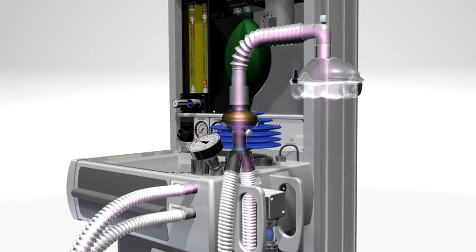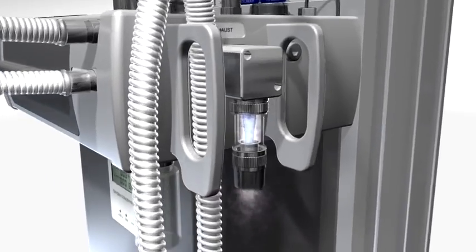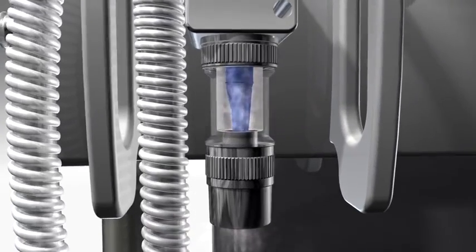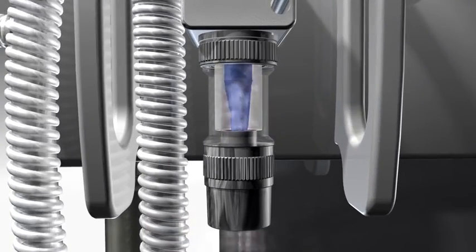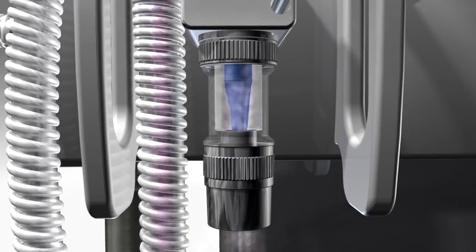The expiratory limb of the Y-piece channels gas to an inflating valve on the UAM that functions like an Ambu valve. It uses a balloon made from long-lasting silicone which closes during inspiration to direct gas into the lungs. During expiration, the balloon empties and opens the exit port, allowing exhaled breath to flow out through a final one-way valve to a scavenging device.